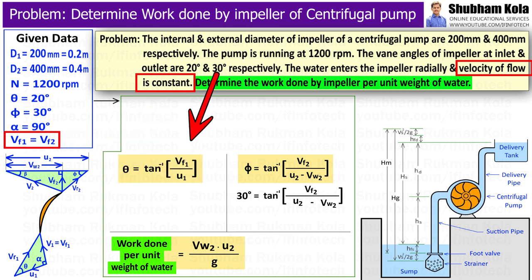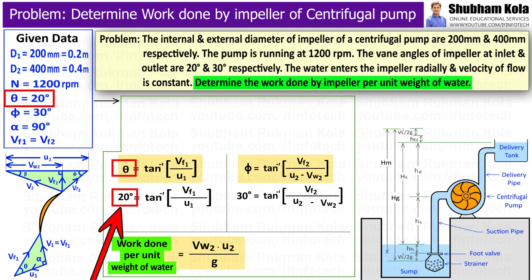And Vf1 can be calculated from trigonometric ratio of tan theta, where theta is blade angle at inlet, which is given in problem as 20 degree.